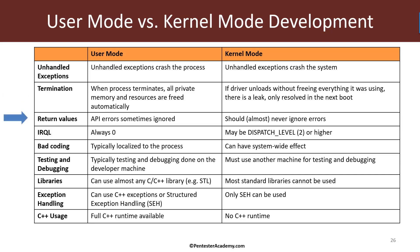What about API errors? In user mode, many functions return a Boolean to indicate success or failure, some return handles, and some return the error code directly. Sometimes in user mode people get a bit sloppy and don't check every return value — the worst case is that the process crashes, which is a very localized effect. Within the kernel, it's much more dangerous, so it's always a good idea to check every return value from every function. In most cases, you should never ignore errors or return values from APIs.